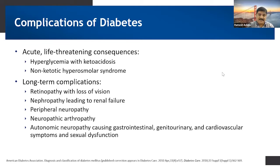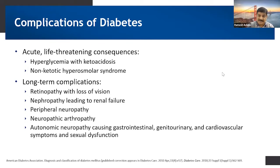The long-term complications are like retinopathy — that is loss of vision — nephropathy, that is renal failure, peripheral neuropathy, neuropathic arthropathy, and autonomic neuropathy causing gastrointestinal, genitourinary, and cardiovascular symptoms, and of course sexual dysfunction.